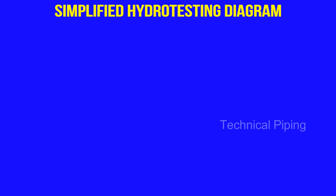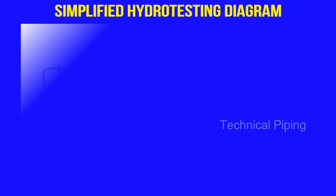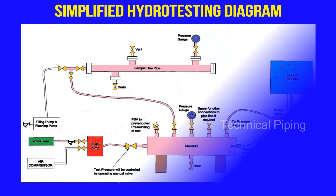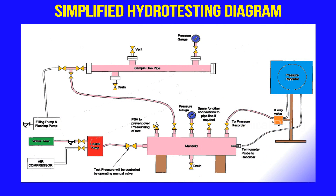This diagram explains a simplified hydro testing plan. It denotes pressure gauge, safety valve location, filling points, drain point, and vent points, etc.